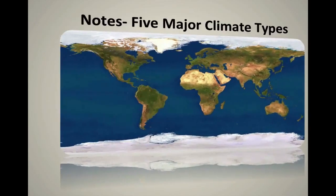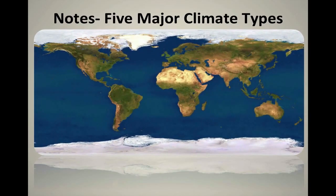Today's lesson will cover the five major climate types. Now, there are more than just five, but we're talking about the major ones. I know we have rainforests and subarctic and so on, but today it's the five major climate types. Let's go.